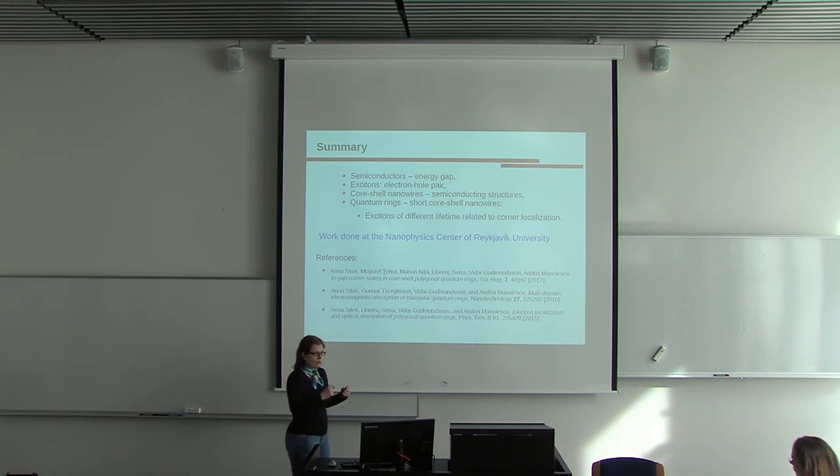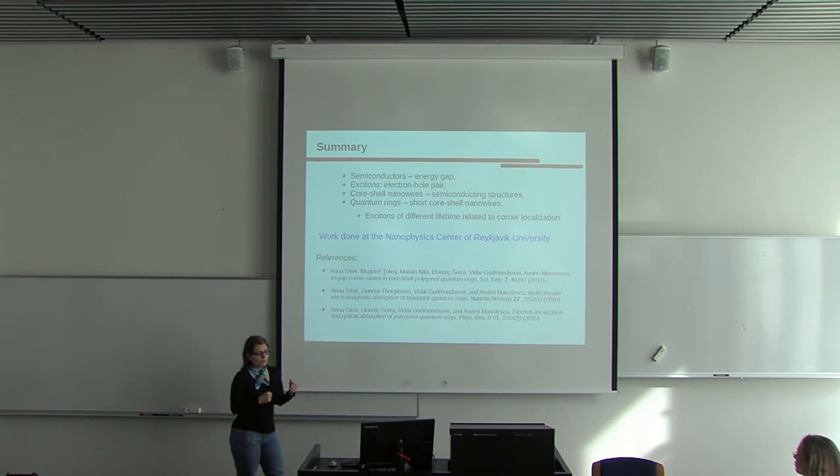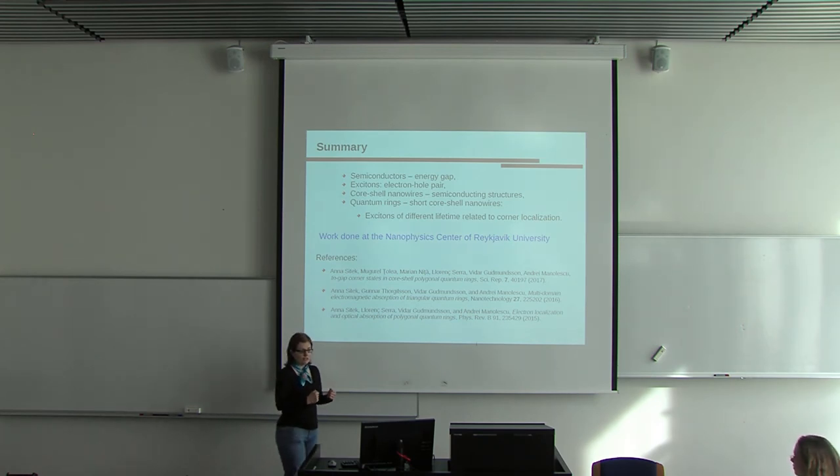They usually have hexagonal or triangular cross sections, and may localize electrons. If those core-shell nanowires are sufficiently short, then they are called quantum rings. And these are the structures we are investigating here in the nanophysics center of the Reykjavik University.